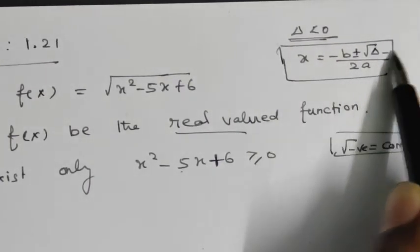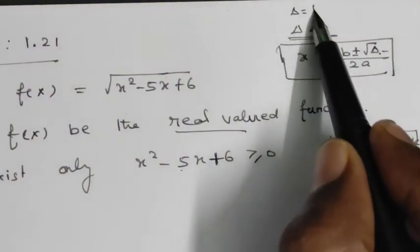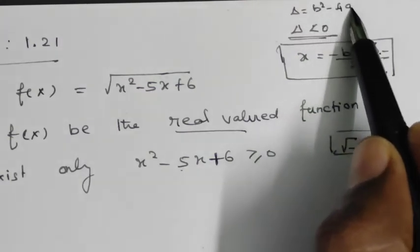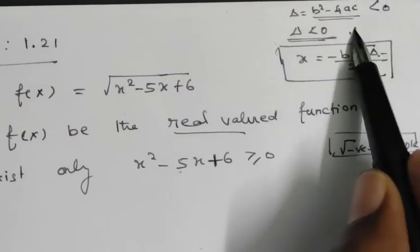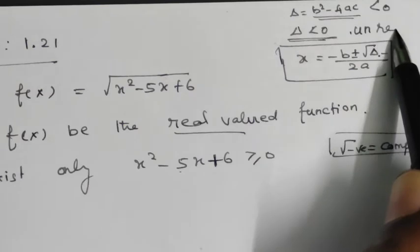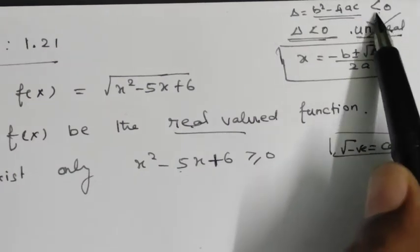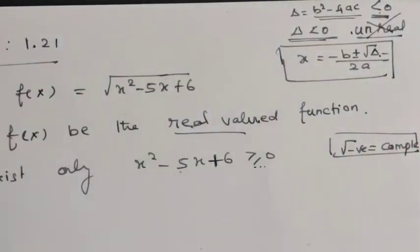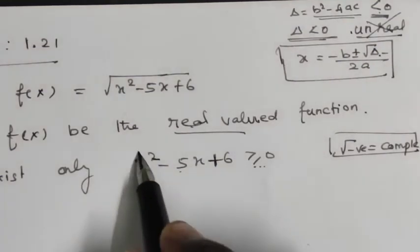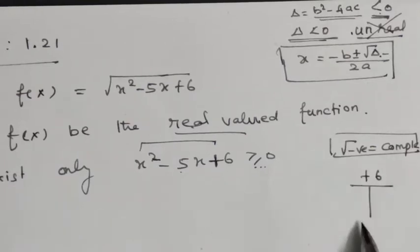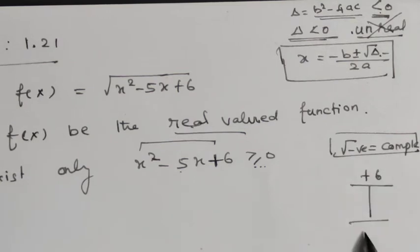We solve the quadratic equation. Delta is the discriminant, the nature of the roots. Delta equals b squared minus 4ac. If b squared minus 4ac is less than 0, there are no real roots. Now, x squared minus 5x plus 6 — we factorize it. The product of first and last is plus 6.